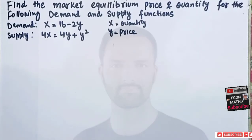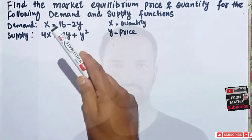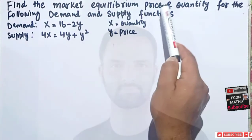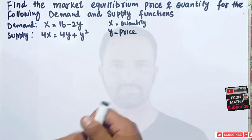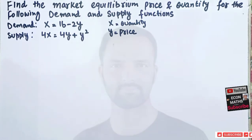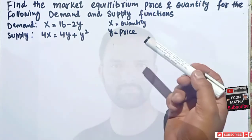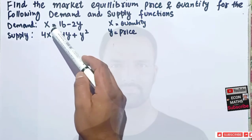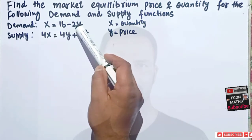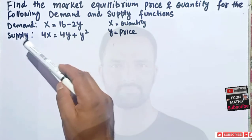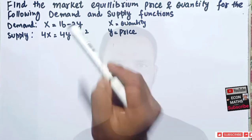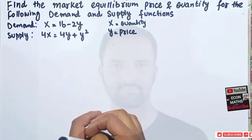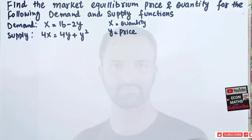In this video we will try to solve a problem on market demand and supply. We need to find the market equilibrium price and quantity for the following demand and supply functions. The demand function is X = 16 - 2Y, where X is quantity and Y is price. The supply function is given as 4X = 4Y + Y².